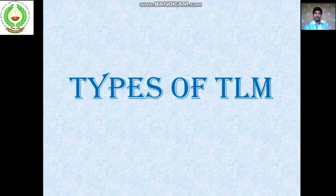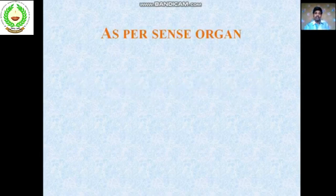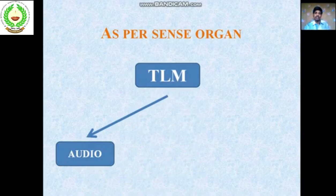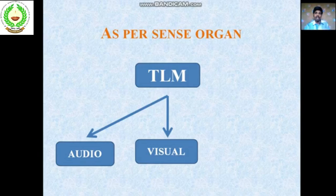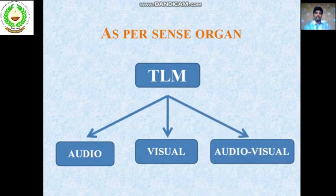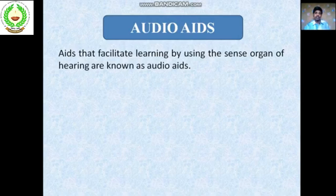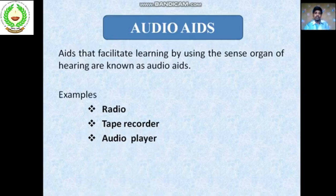We can divide TLM into different parts as per sense organ, dimension, or the projection of light. As per the sense organ, we can divide it into three parts: number one, audio teaching aids; number two, visual teaching aids; and number three, audio-visual teaching aids. Audio teaching aids facilitate learning by using the sense organ of hearing — that means the ear.